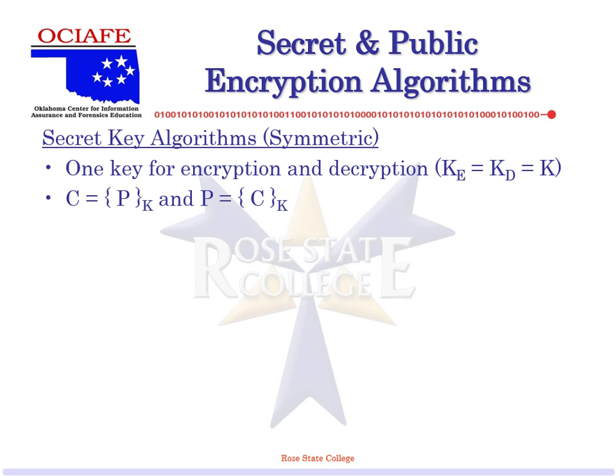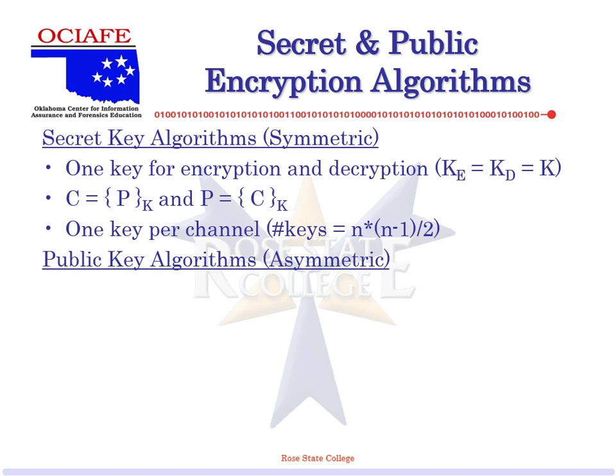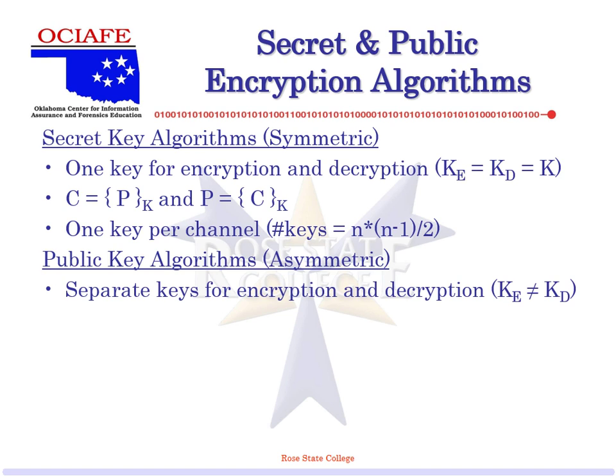So I can encrypt with one key, decrypt with a different key, or even the same — really it's the same keys, but it doesn't matter. One key per channel. There's the math on calculating how many keys we need. Public key, on the other hand, uses separate keys for both, and all this is repeated so far.